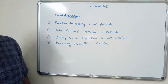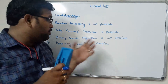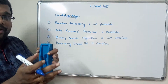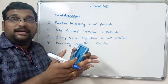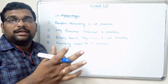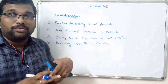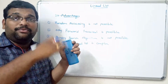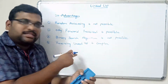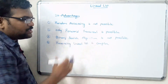One more disadvantage is that reversing a linked list is somewhat complex. To reverse it, we need to change the links of every node — each node currently points to the next node, and all those links must be redirected. That makes the reversal operation more complex.